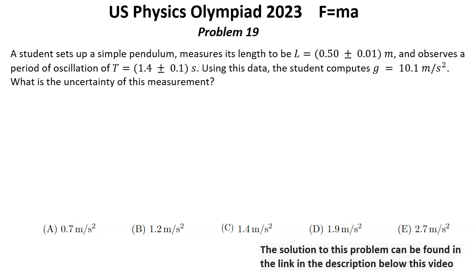Using this data, the student computes g equals 10.1 meters per second squared. What is the uncertainty of this measurement?